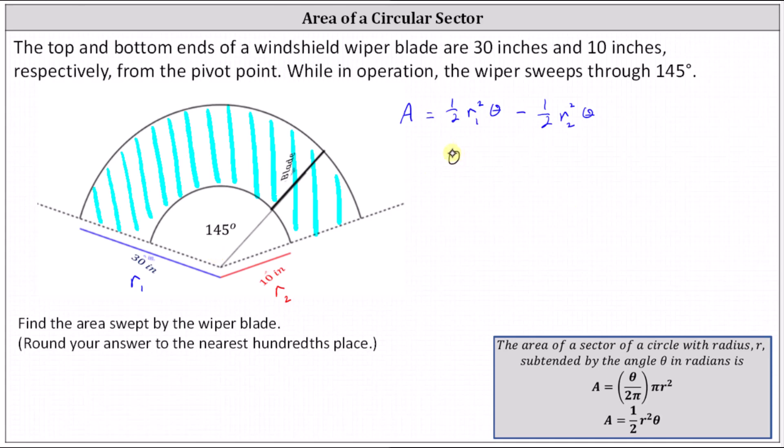Let's go ahead and find θ in radians, which is 145 degrees over 1 times π radians divided by 180 degrees. Simplifying before multiplying, 145 and 180 share a common factor of 5.